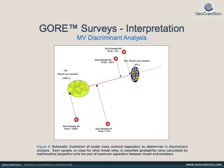In three-dimensional space, the center of the dry model samples and the center of the productive model samples are defined as 0 and 100 percent probability of the targeted hydrocarbon phase. The survey grid samples are projected into a probability line connecting the two end member model wells.